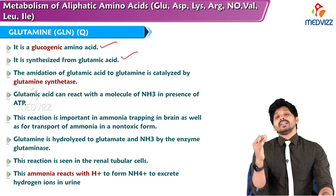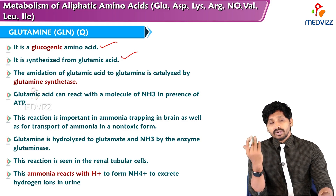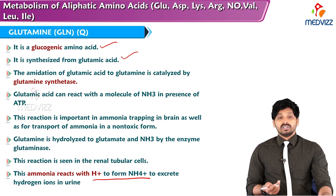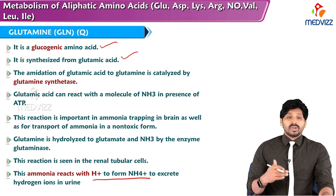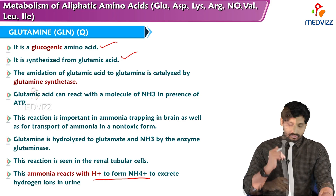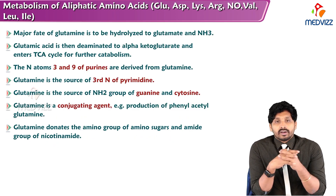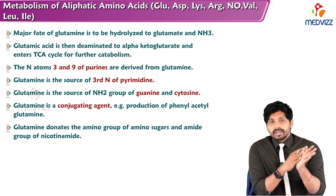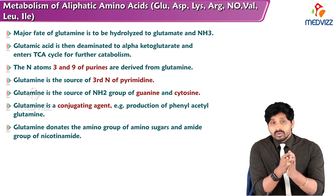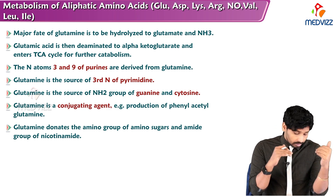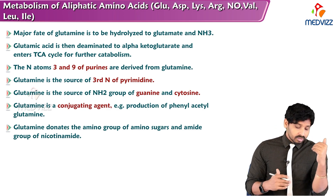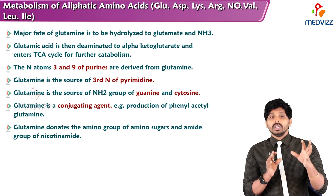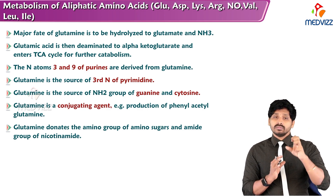In renal tubular cells, glutamine also has a different function: the ammonia released reacts with hydrogen to form ammonium ions (NH4+), excreting hydrogen ions in urine. The major fate of glutamine is hydrolysis to glutamate and ammonia by glutaminase; glutamic acid is then deaminated to alpha-ketoglutarate entering the TCA cycle. Nitrogen atoms 3 and 9 of purines are derived from glutamine.